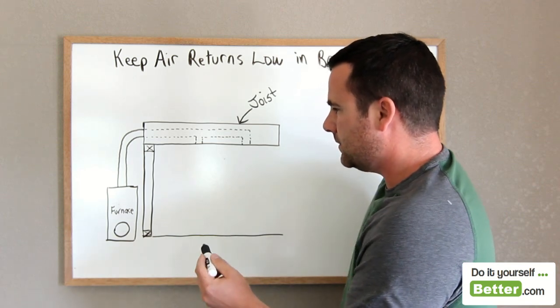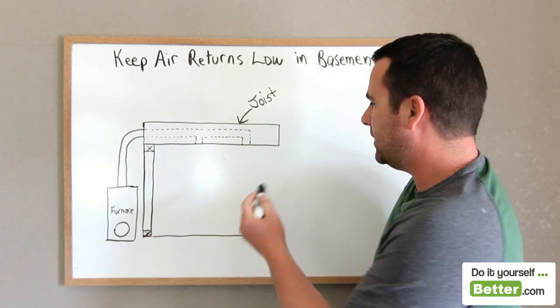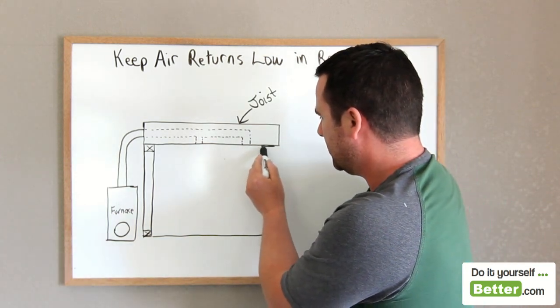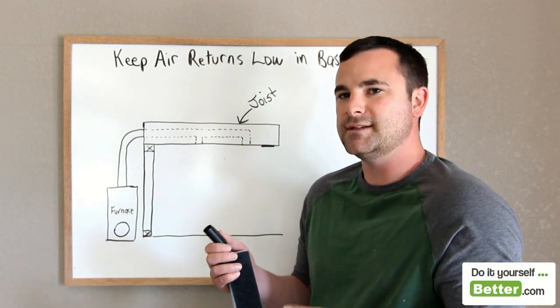Normally in a basement, they have your air return in the ceiling. So let's say this is the air return right here. It's usually just a flat grill on the ceiling.